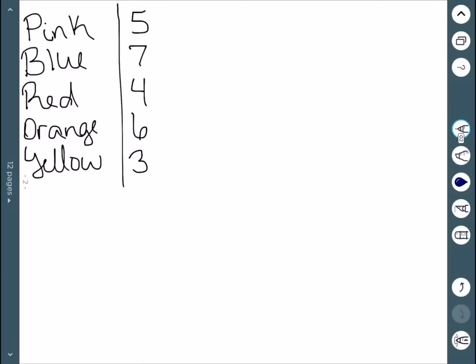Here we have an example where we interviewed several people and asked them what their favorite color was and got these results. So if we want to do a bar graph, the x-axis will contain these colors, which we'll abbreviate with a single letter.